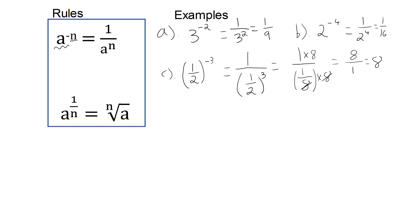The second rule is that a to the power of 1 over n is equal to the nth root of a. So, for example, if I have a power of 1 half, that just means we need to square root.